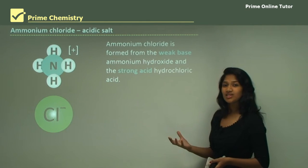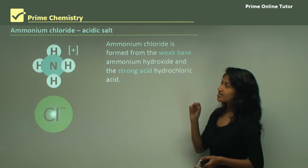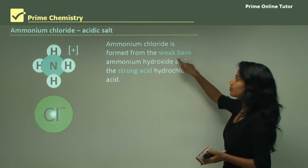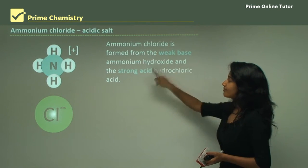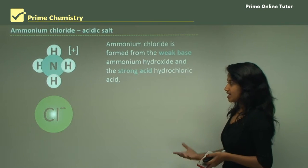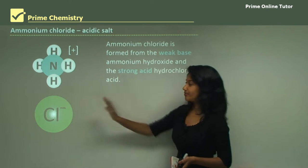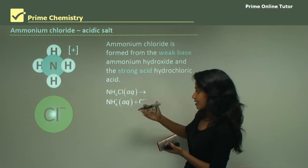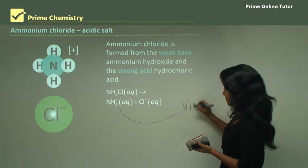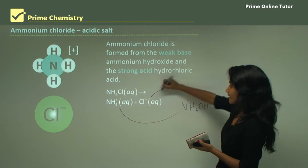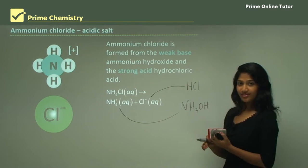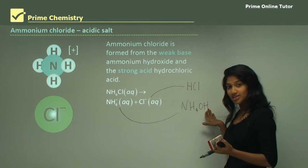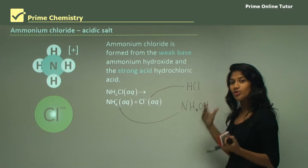Now let's look at an acidic salt — ammonium chloride. Ammonium chloride is an acidic salt formed when the weak base ammonium hydroxide and the strong acid hydrochloric acid react. It produces an ammonium ion and a chloride ion — the ammonium comes from ammonium hydroxide and the chloride from HCl. That makes it an acidic salt: strong acid, weak base.